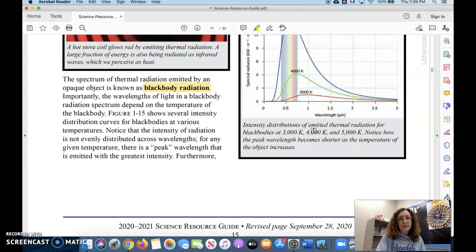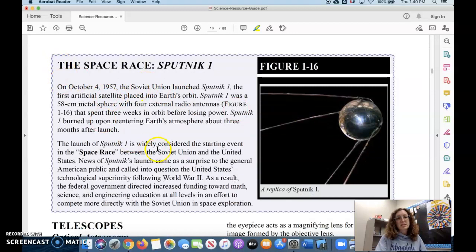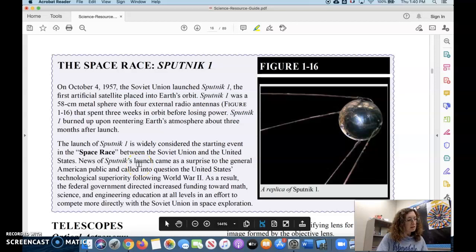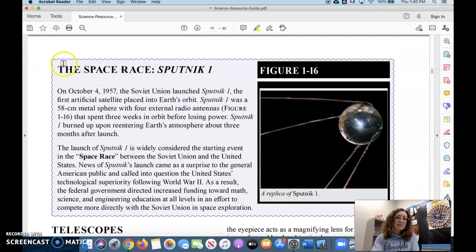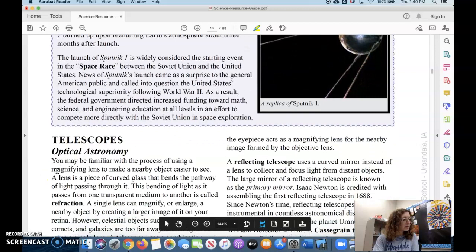Okay, Sputnik. Sputnik is the very first satellite to go into space. It's launched by the USSR or the Soviet Union, and it starts the space race. Again, as a reminder, anytime you see these little postage stamp spaces in your resource guide, you should read them. They're very important and interesting parts of the story.